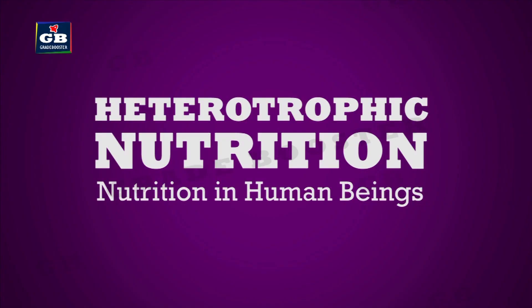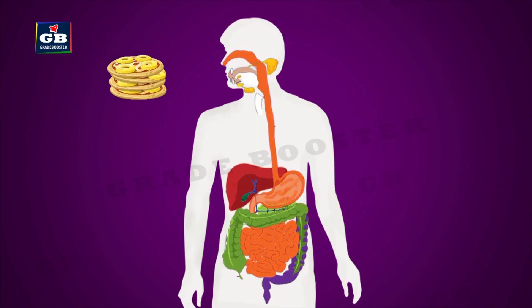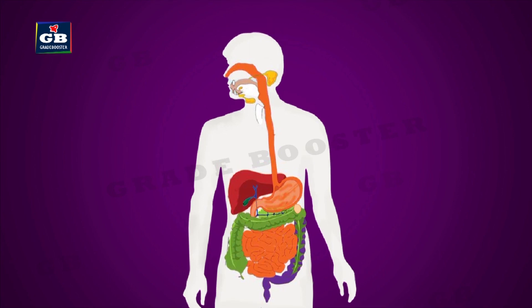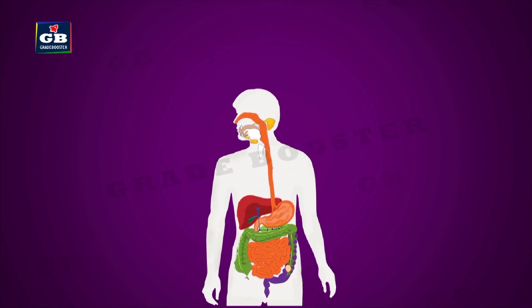Nutrition in human beings. Food enters our body through the mouth. Our digestive system begins with the mouth and ends with the anus. Different parts of the digestive system are arranged like a long coiled tube.